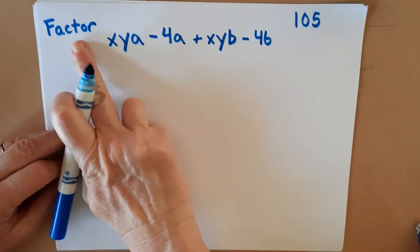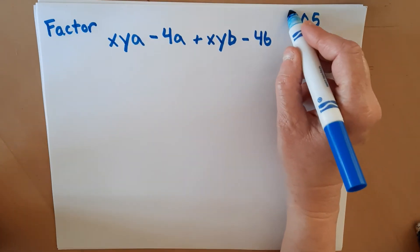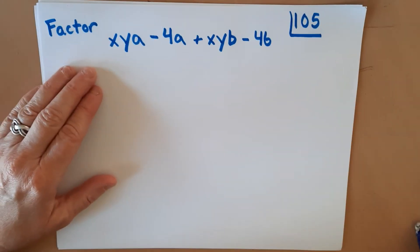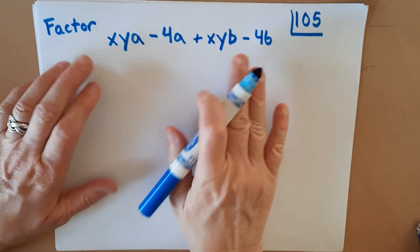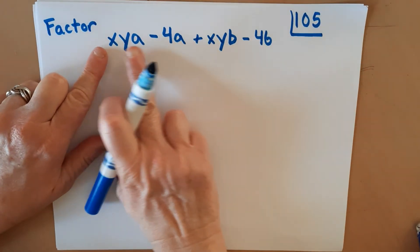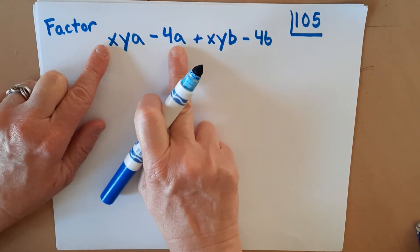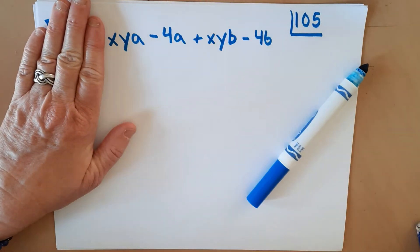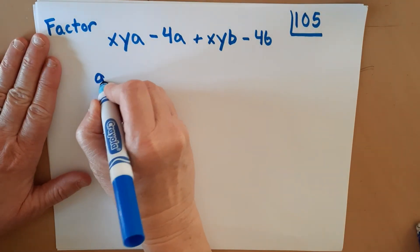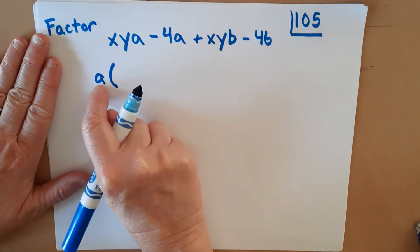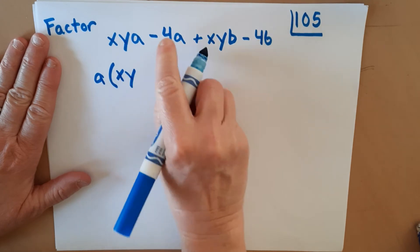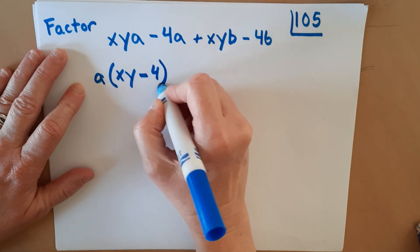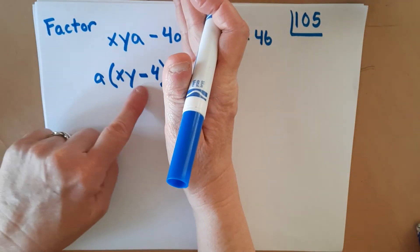It asks us to factor this by grouping. We don't need to solve anything — there is no equal sign. We're going to come up with some groups and factor them out. We'll start with the first two terms. We can see they have A in common, so we're going to factor out A. XYA divided by A leaves XY, and 4A divided by A leaves 4. So factoring out A gives us A times (XY minus 4).